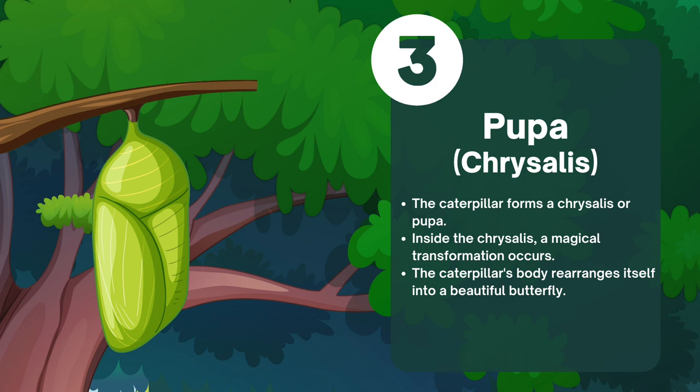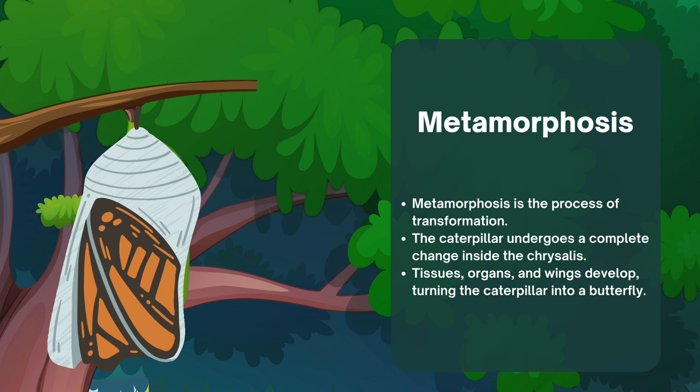After the larva stage comes the pupa stage, during which the caterpillar forms a chrysalis, or pupa. Inside the chrysalis, a magical transformation occurs — the caterpillar's body rearranges itself and turns into a beautiful butterfly. This transformation process is called metamorphosis.